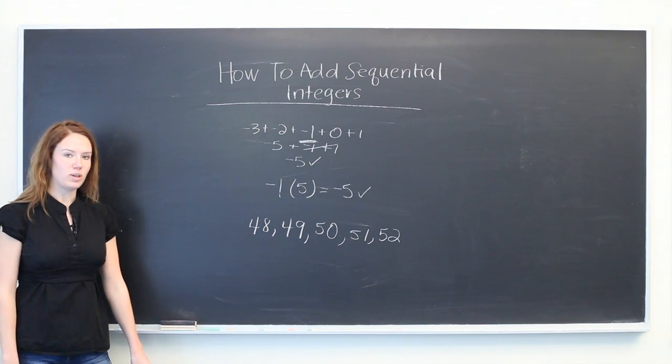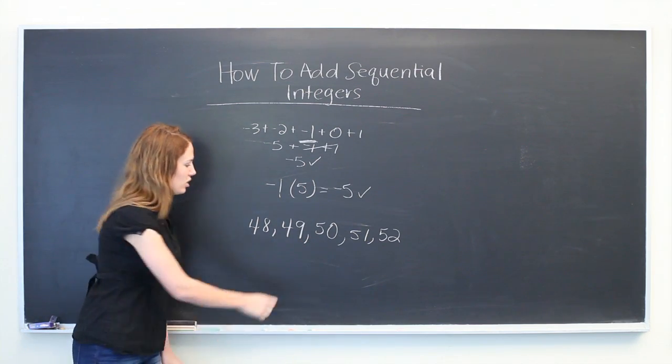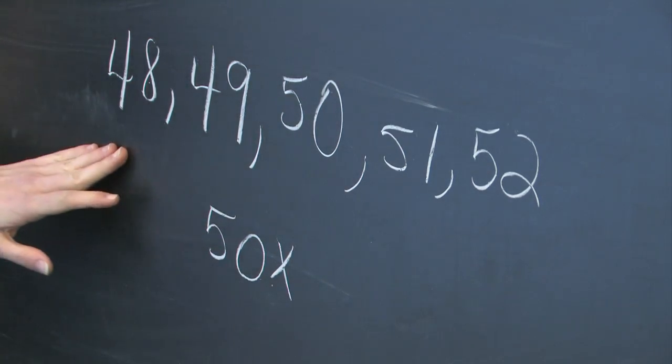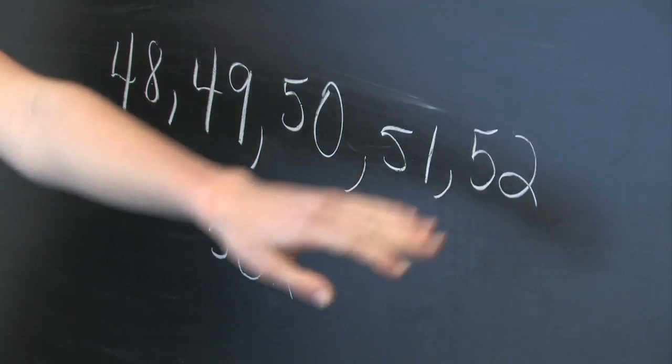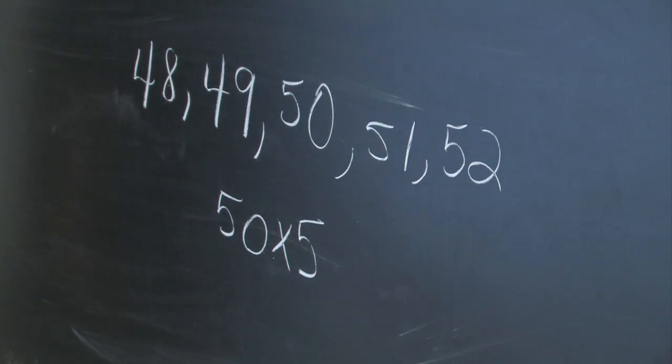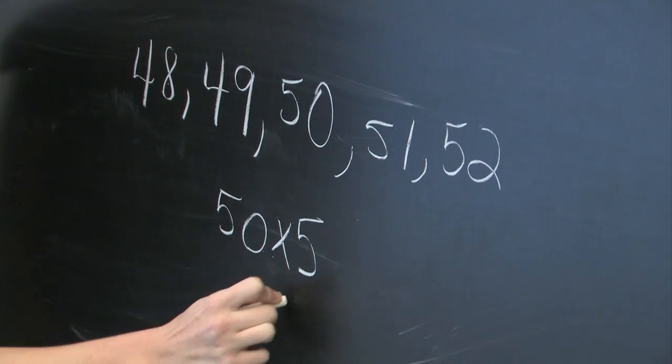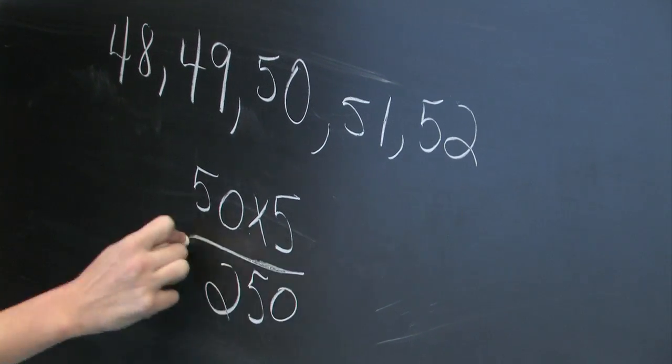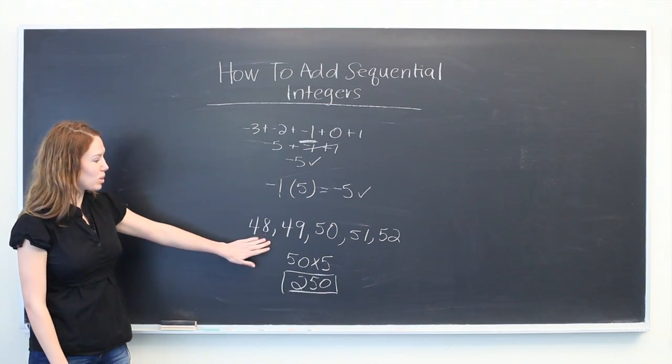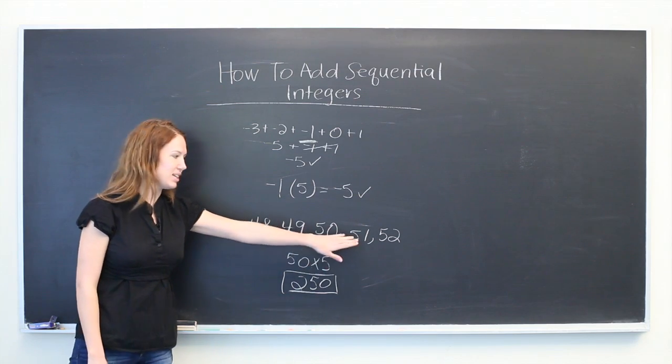So in this case all you have to do is take the median, which is 50, and multiply it by the number of values in your series, which again is 5, and you'll find that your answer is 250. A much easier approach than simply saying 48 + 49 + 50 and so on.